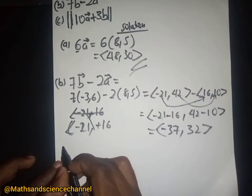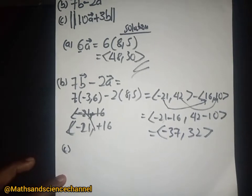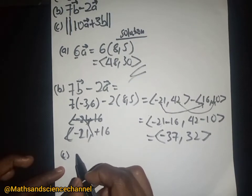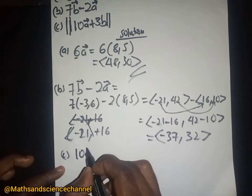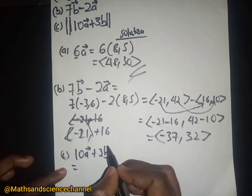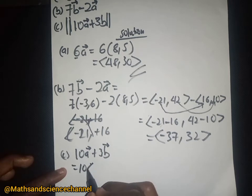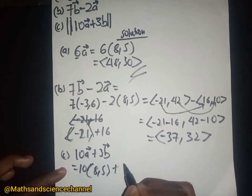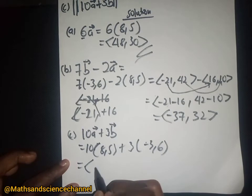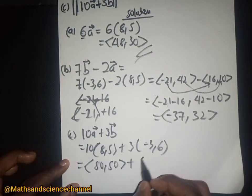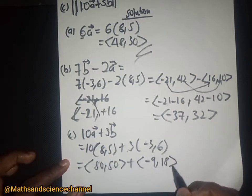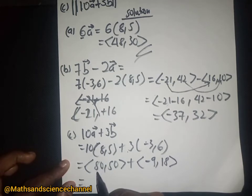For part (c), we first need to compute the vector inside the magnitude. We have 10a plus 3b. So 10 multiplied by (8, 5) gives (80, 50), and 3 multiplied by (-3, 6) gives (-9, 18).